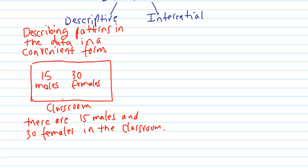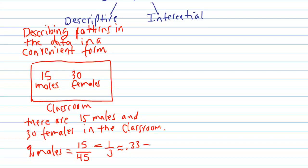Another way to state that would be to convert this into percentages. The percentage of males is calculated by taking the number of males and dividing by the total number of people in the classroom, which is 45. That gives us one-third, or 0.33, or multiplied by 100%, that's 33%. So 33% of the students are males.